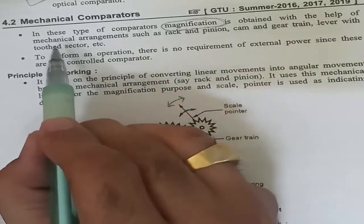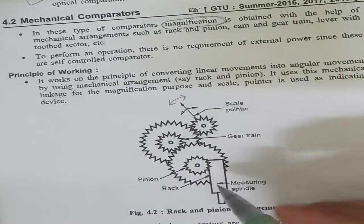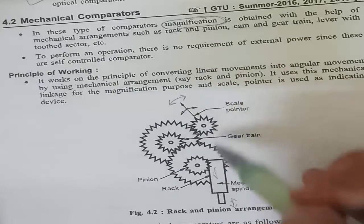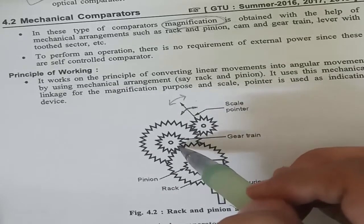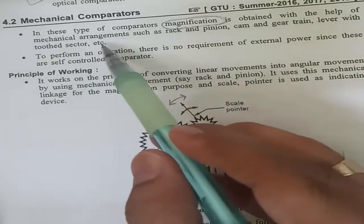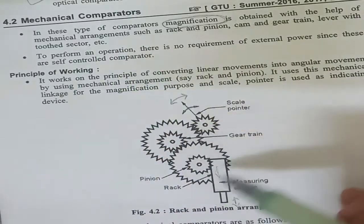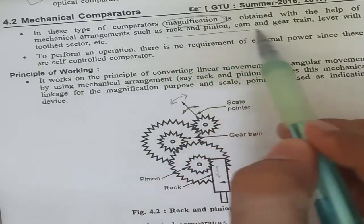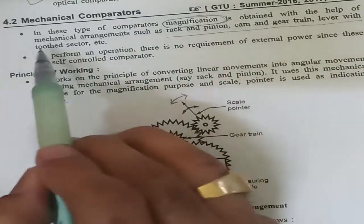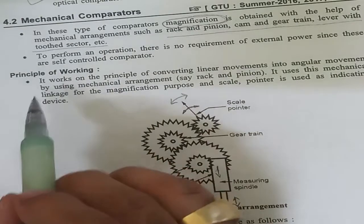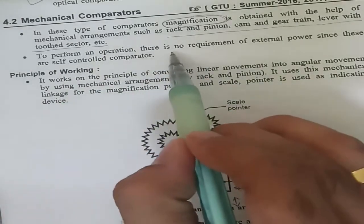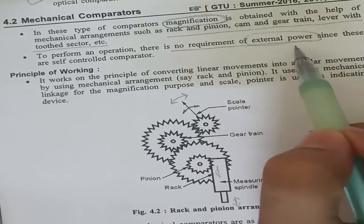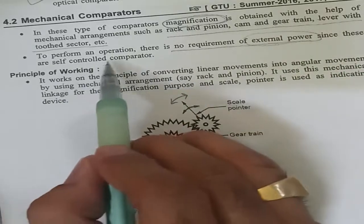Magnification is obtained using mechanical arrangements such as rack and pinion, cam and gear train, lever with tooth sectors, etc. There is no requirement for external power, since these are self-controlled comparators. Mechanical comparators are also called self-controlled comparators.